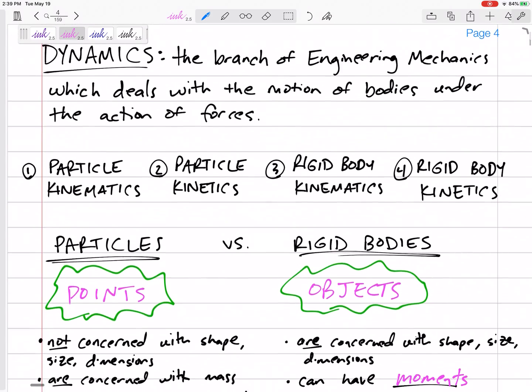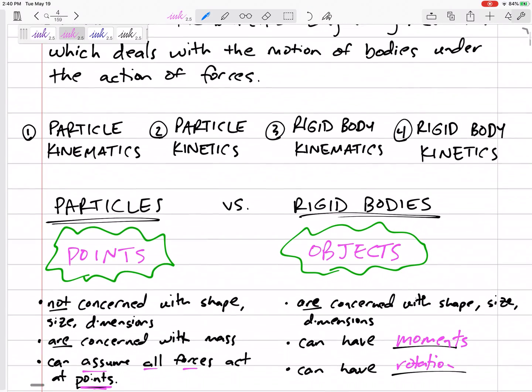Test one will be particle kinematics. Test two will be particle kinetics. Test three will be rigid body kinematics. The final exam will be rigid body kinetics and everything - it will be comprehensive. We'll have new rigid body kinetics plus everything from tests one, two, and three.